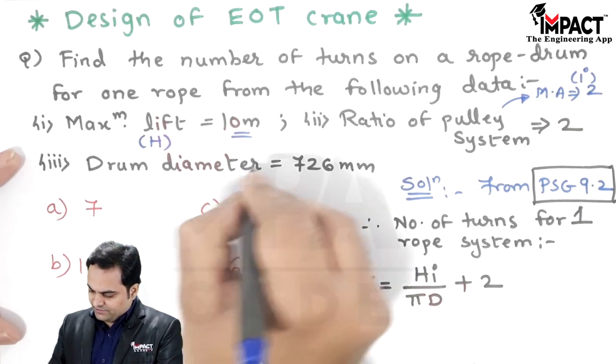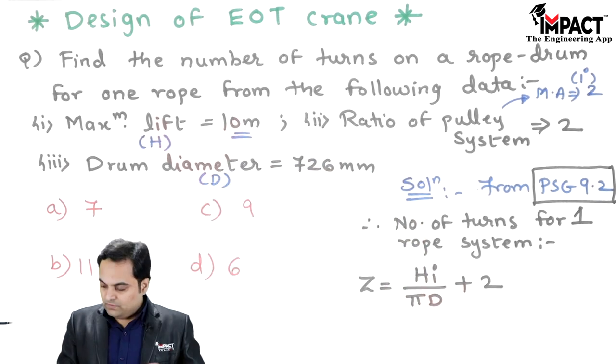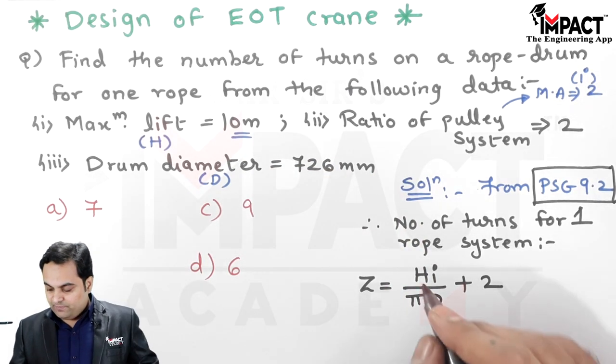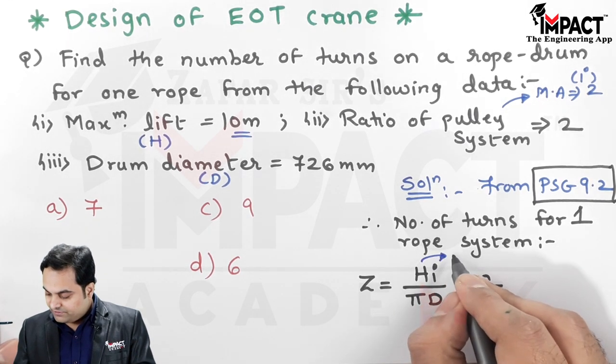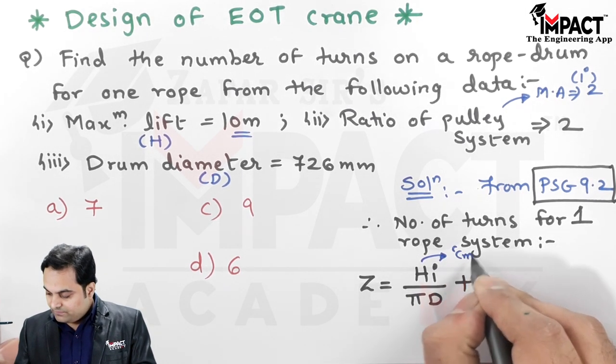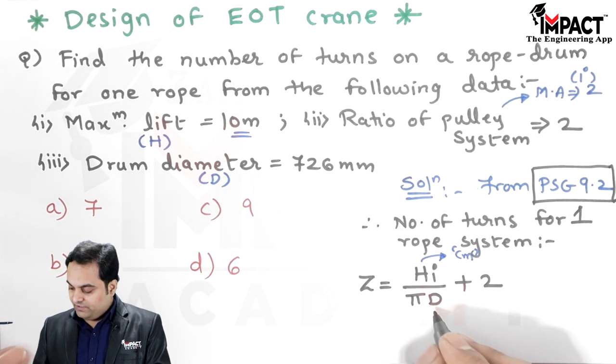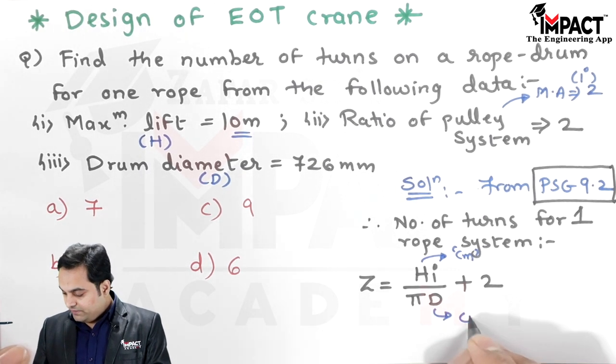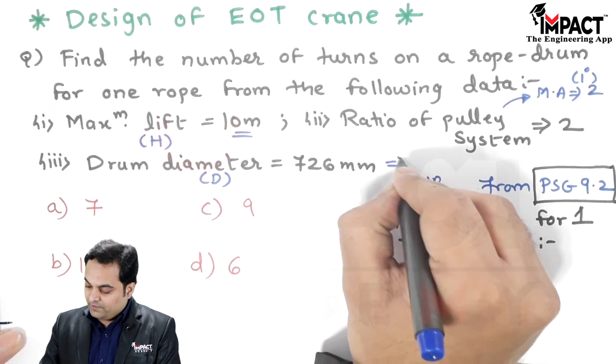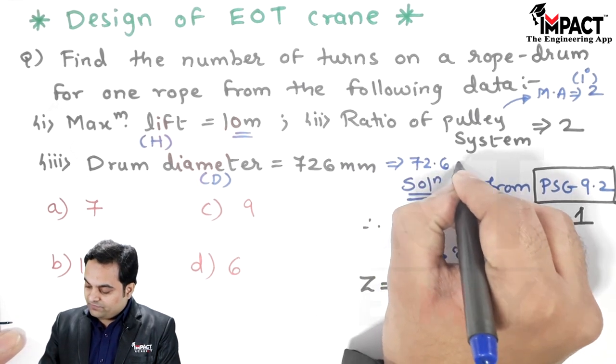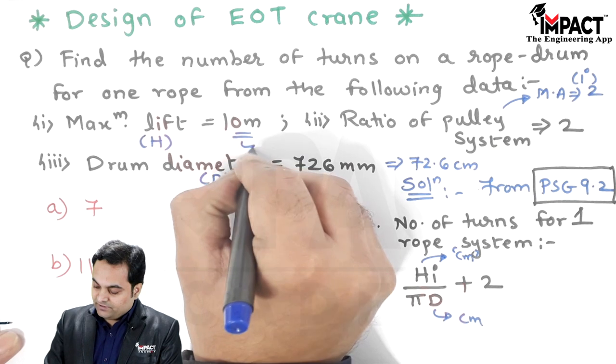Just we have to remember that when we are putting the values, H should be in terms of centimeters because it is given in this formula. Then even D value should be in terms of centimeters. So 726 mm would be 72.6 centimeters, and 10 meters is 1000 centimeters.